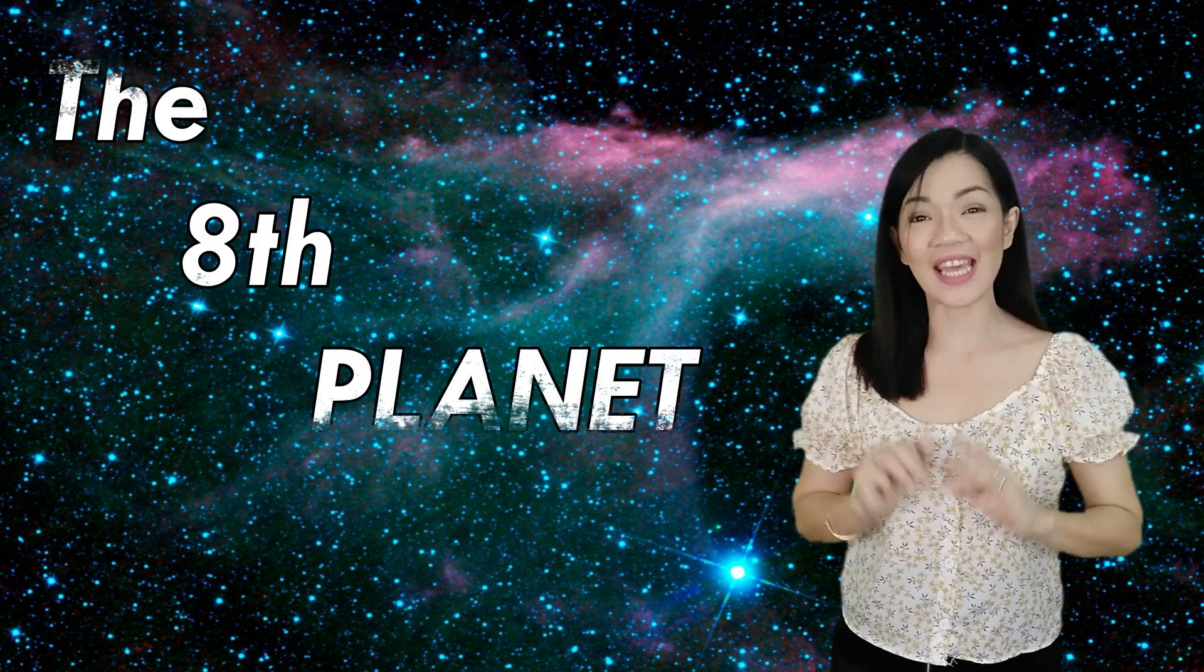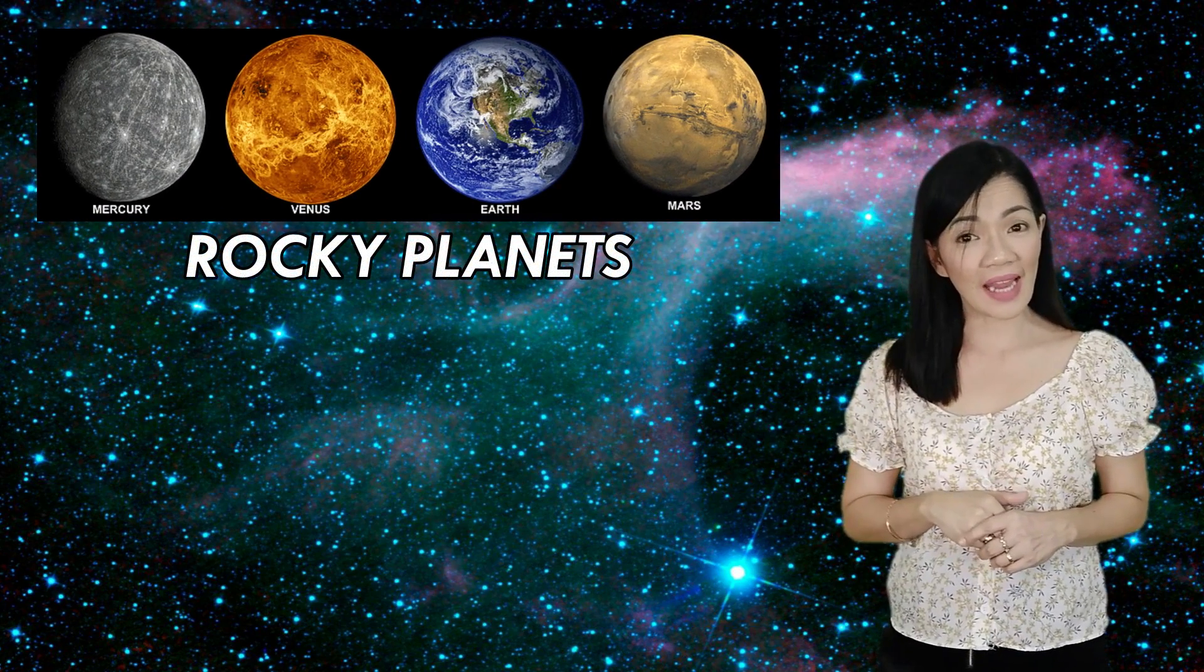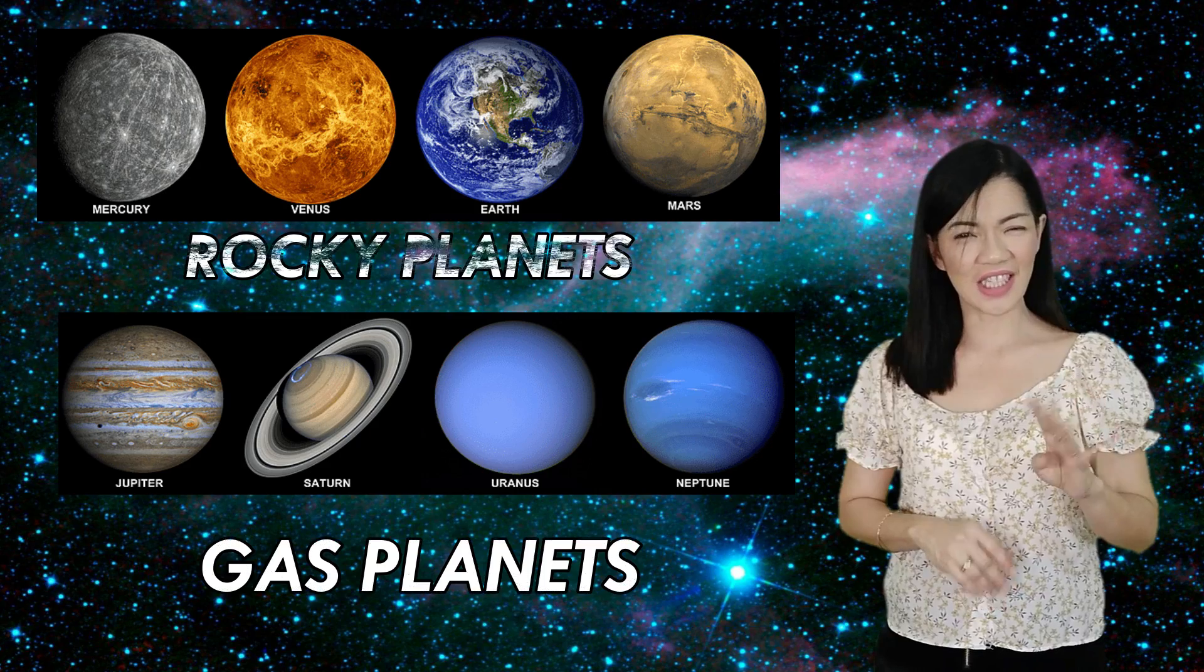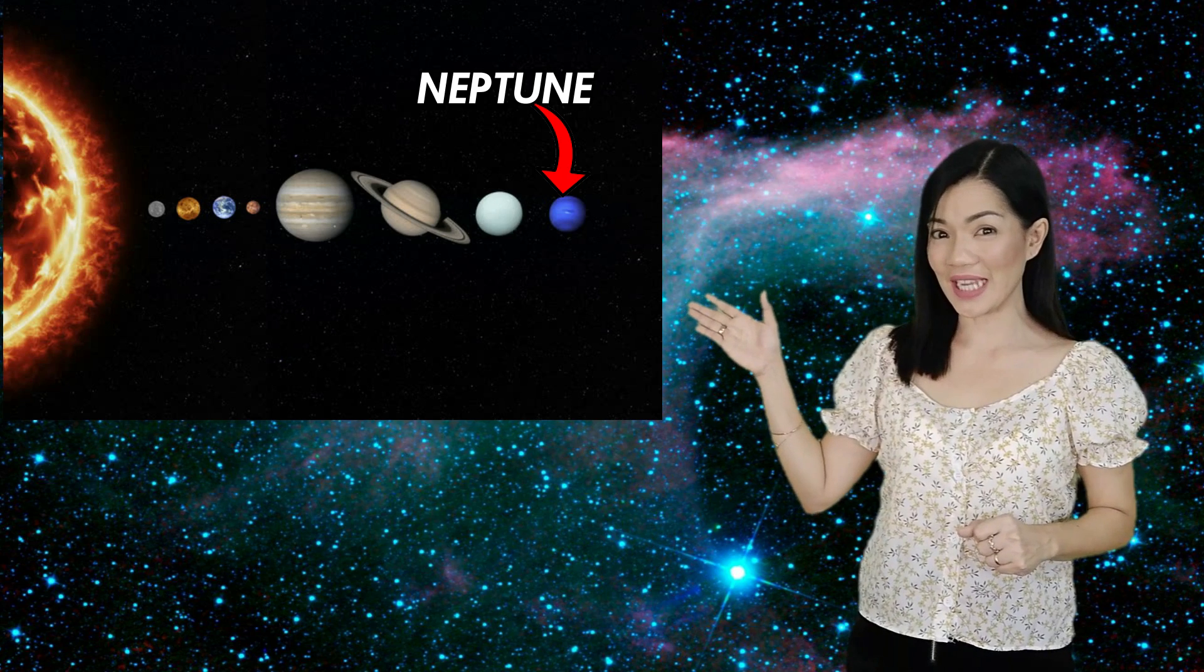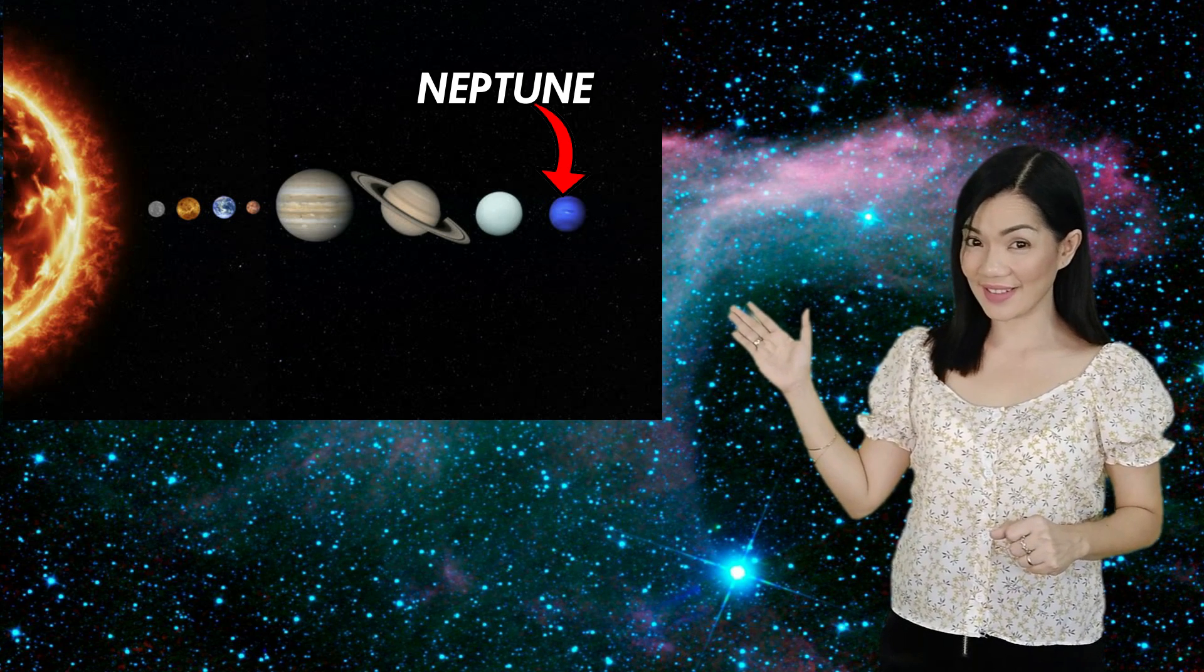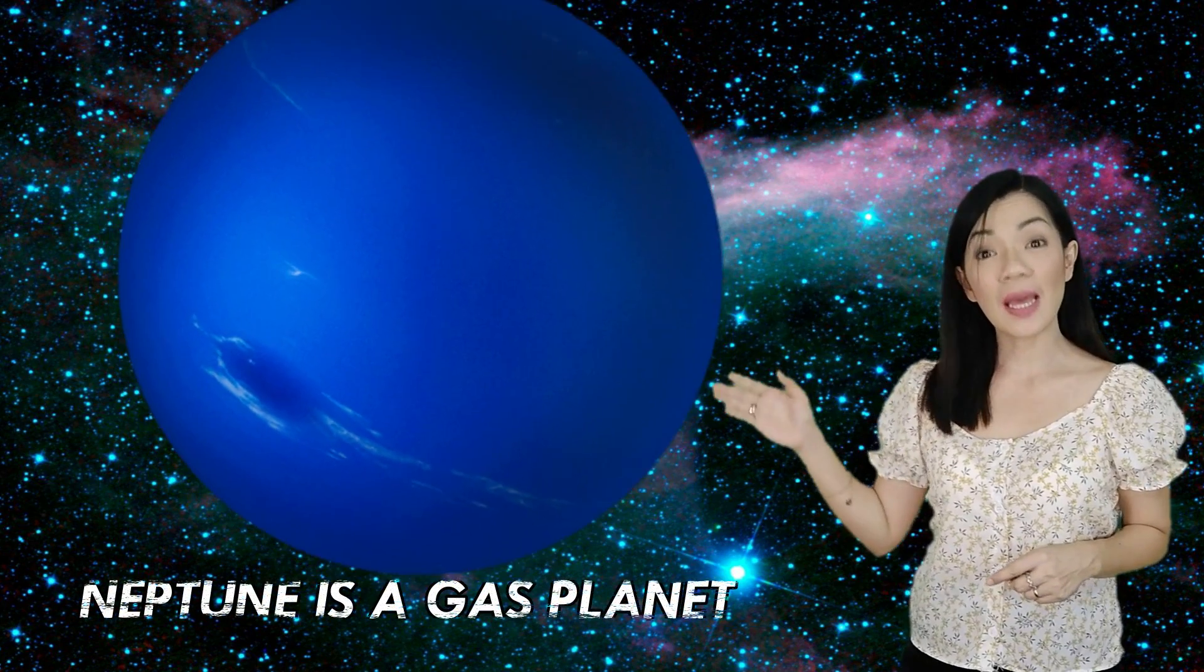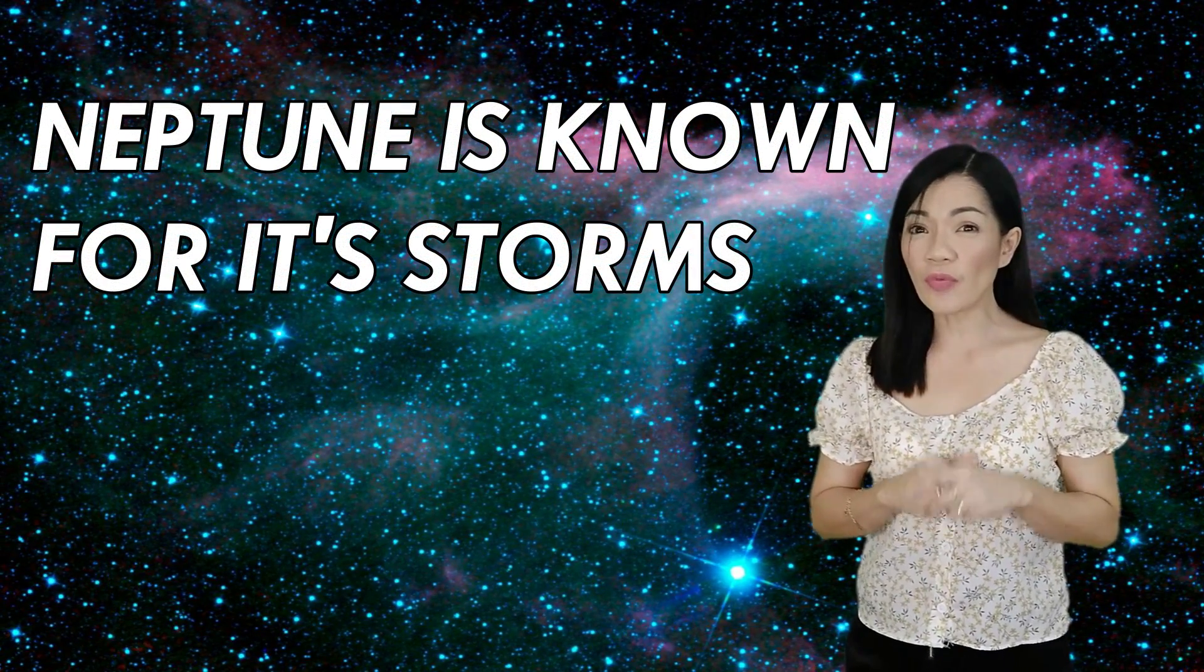The eighth and the final planet is Neptune. Okay! That means the first four planets are rocky planets and the final four planets are gas planets. And Neptune is one of the gas planets. So, here is where Neptune is. It is the farthest planet from the Sun. Like Uranus, Neptune is a gas planet that is made of liquid.